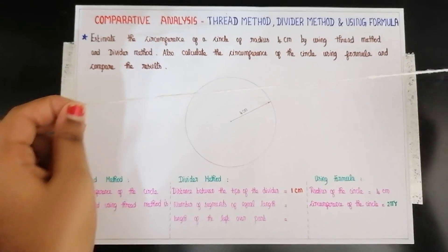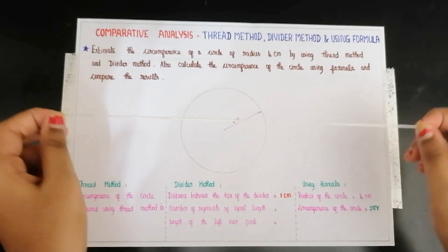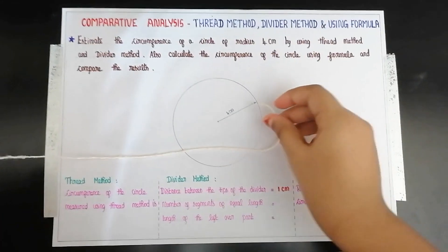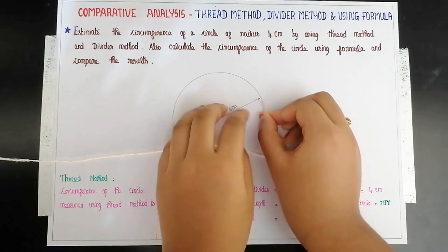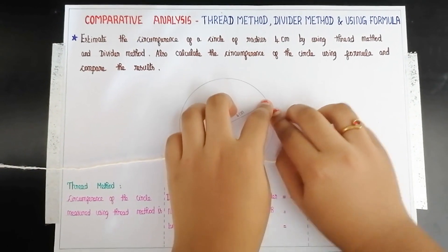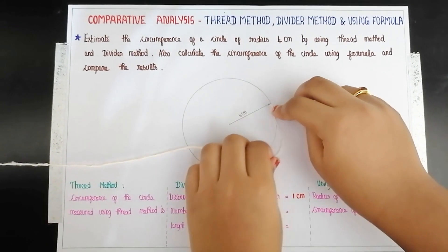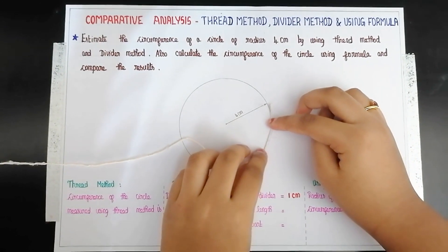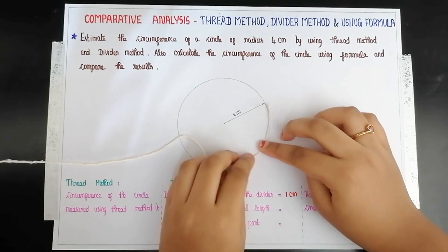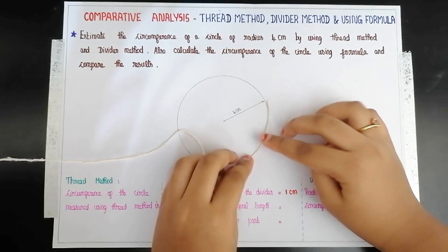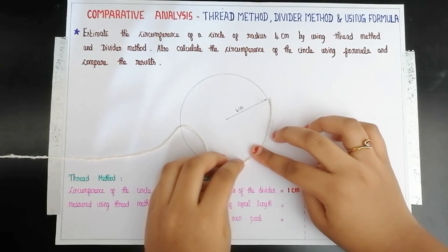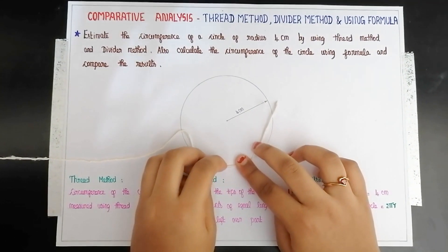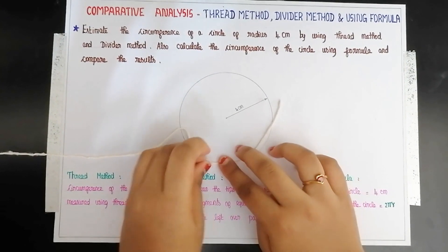First we are going to measure the circumference of the circle using thread method. Take a long thread. Place the thread at the beginning of the circle and press it down with your thumb. Press the other end of this traced thread with your finger of the other hand. Keep on tracing the entire circumference of the circle with the thread.